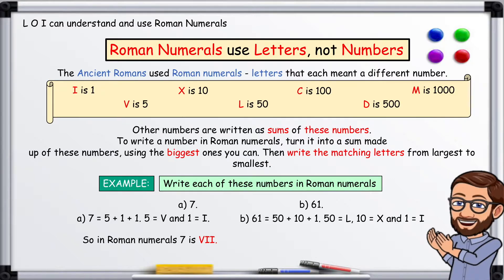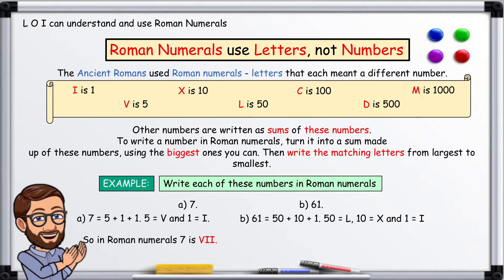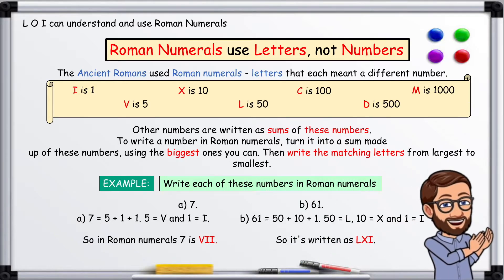B, 61 equals 50 plus 10 plus 1. 50 equals L, 10 equals X, and 1 equals I. So it is written LXI.